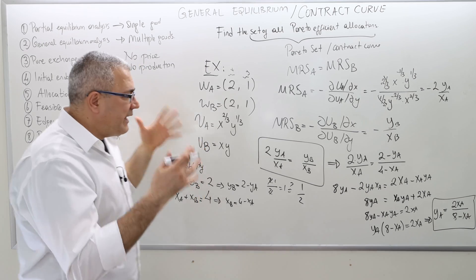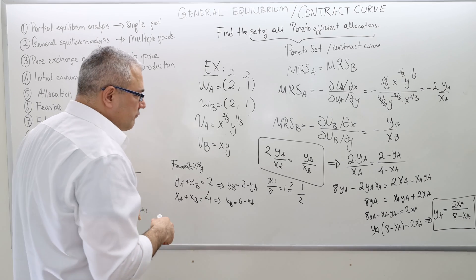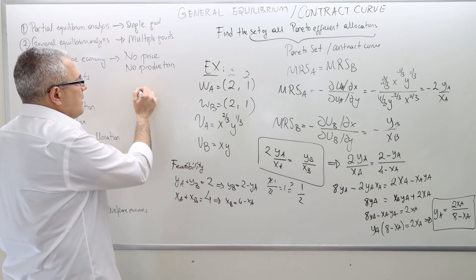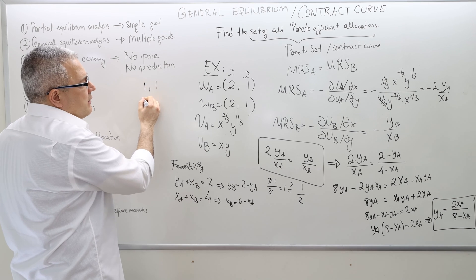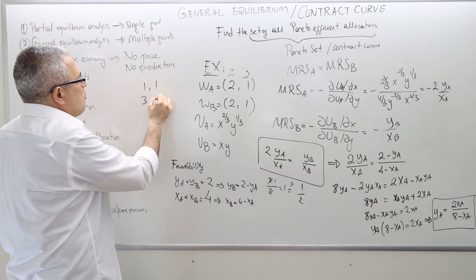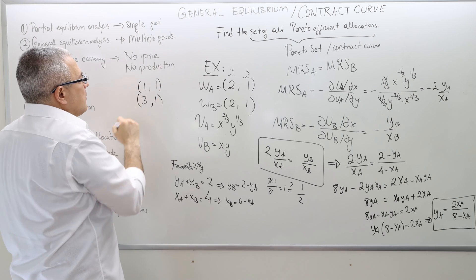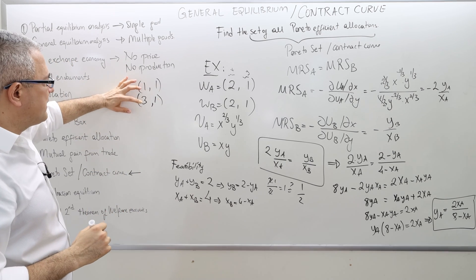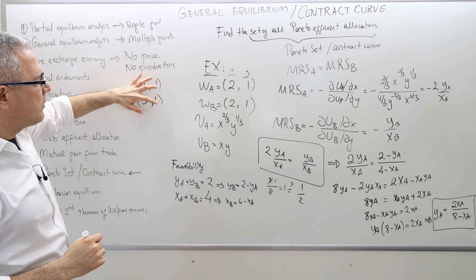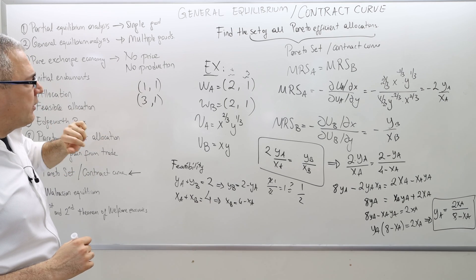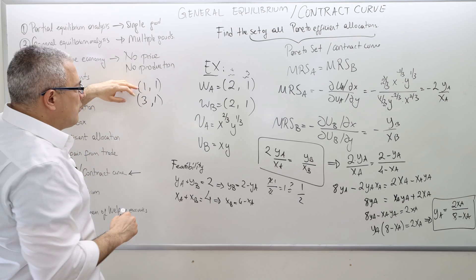Pick another allocation. For example, 1, 1 and then 3, 1. So agent, remember, this is feasible because this is total 4, this is total 2. Is this Pareto-efficient? Probably not. Well, again, check.